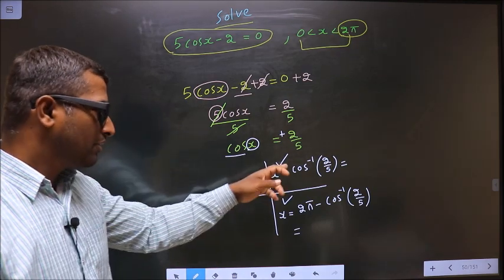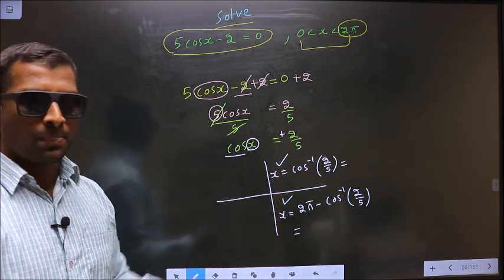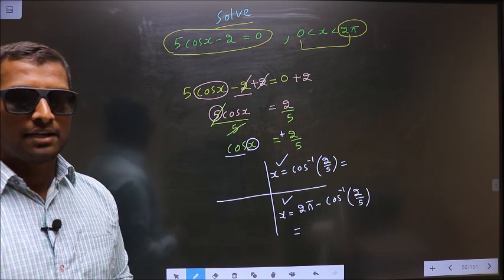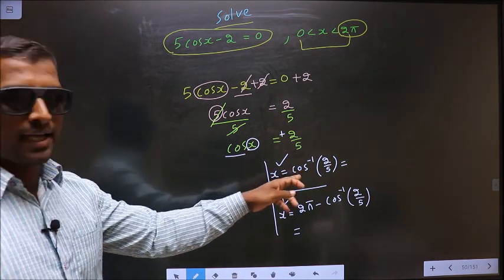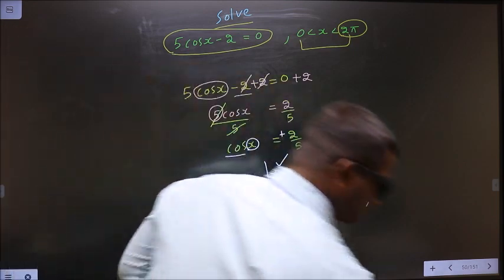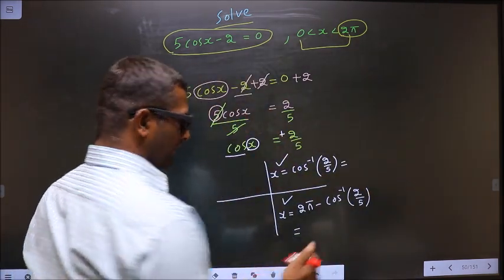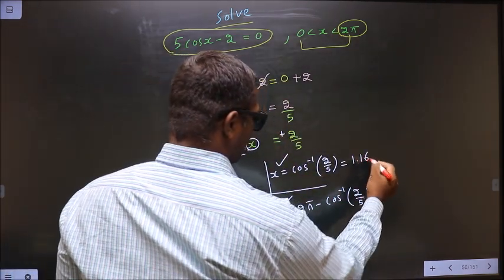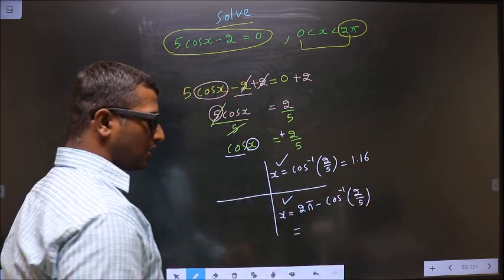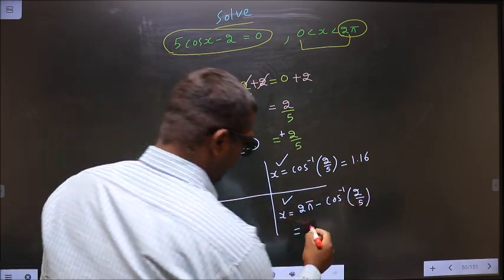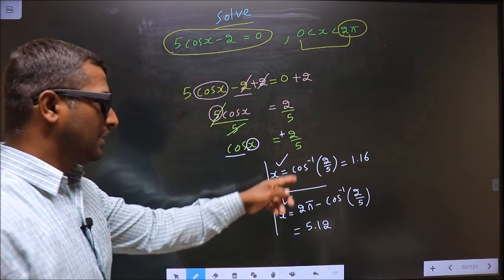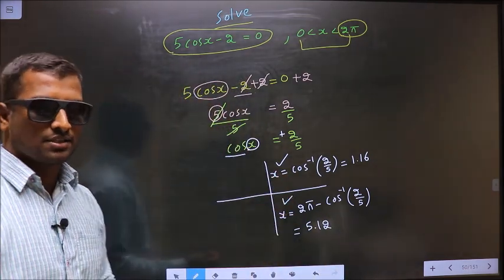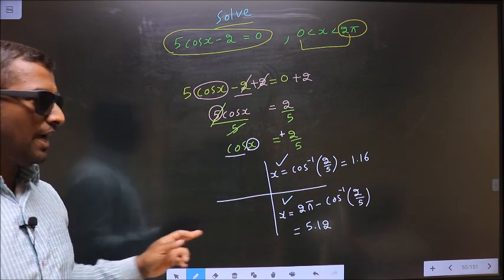Now before you calculate these two, make sure your calculator is in radians mode. Now you put this in the calculator, you should get 1.16. You put this in the calculator, you should get 5.12. These are our answers. Am I clear?